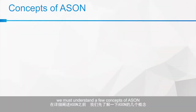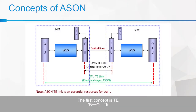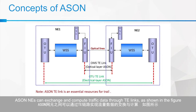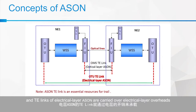Before we can proceed further, we must understand a few concepts of ASAN. The first concept is TE. TE is the traffic management link. ASAN NEs can exchange and compute traffic data through TE links, as shown in the figure. TE links of optical layer ASAN are carried over optical layer overheads, and TE links of electrical layer ASAN are carried over electrical layer overheads.